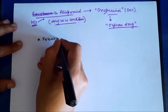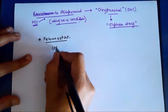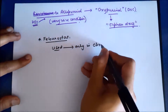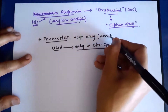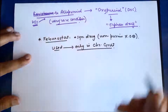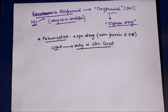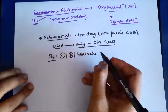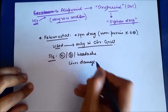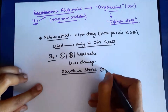Another drug is febuxostat, which is used only for the treatment of chronic gout and not for other conditions associated with hyperuricemia. It is a synthetic, non-purine xanthine oxidase inhibitor. Side effects of febuxostat include nausea, diarrhea, and headaches. It can also cause liver damage, and because it inhibits xanthine metabolism, it causes increased excretion of xanthine, which can result in xanthine stones.